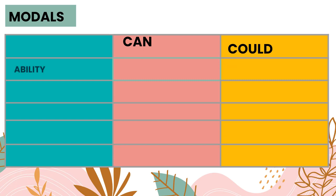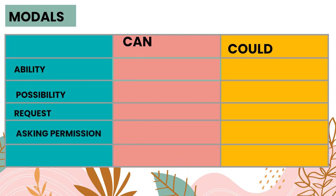Can can be used as ability, and could can also be used as ability. Can can also be used to show possibility, and could can also be used for possibility. They both can be used to make requests and to ask permission. Can and could are also used to talk about things which are allowed to be done.